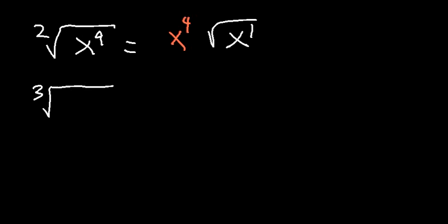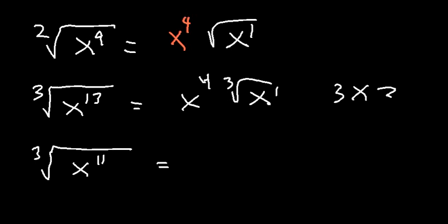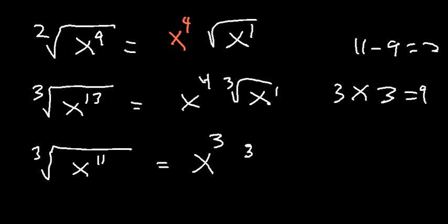For the cube root of x to the 13: how many times does 3 go into 13? 3 goes in 4 times with 1 remaining, so the answer is x to the fourth, cube root of x. For the cube root of x to the 11: 3 goes into 11 three times (3 times 3 is 9), and 11 minus 9 is 2, so we get x cubed, cube root of x squared.